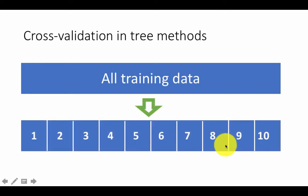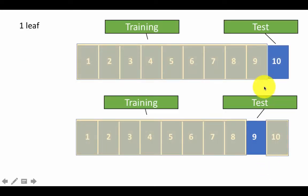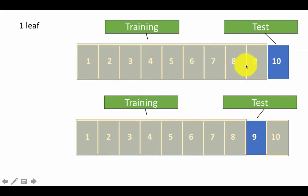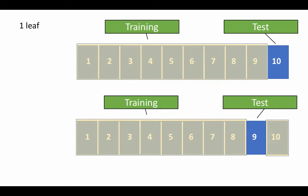In cross-validation, they take all the training data and split it into 10 equal parts randomly. Similarly to how we partitioned into two or three partitions before, they create 10 random partitions from the training data. They consider 9 of those 10 as training and the last one as the test, then build a tree model using the first 9 partitions and test how it performs on the 10th partition, calculating the deviance or RMS error.